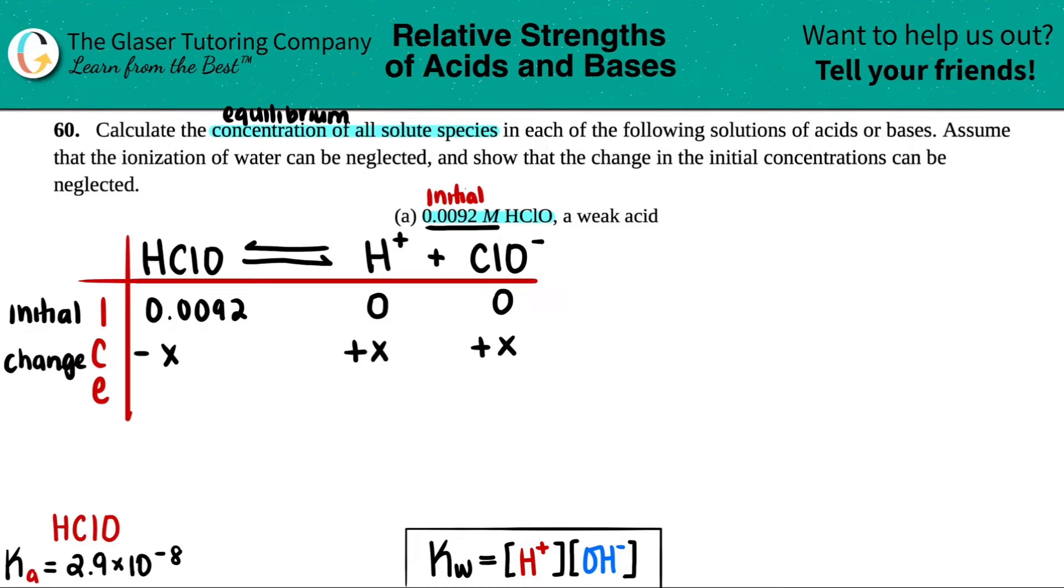Now remember, these go by what the coefficients are. But with acid-base reactions, it's going to be a one-to-one-to-one ratio. So you don't even have to worry about minus 2X or anything like that. It's just going to be minus X and plus X. The E stands for equilibrium. And it's just the initial with the change. So this would be 0.0092 minus X. Zero plus X is just X and zero plus X is just X.